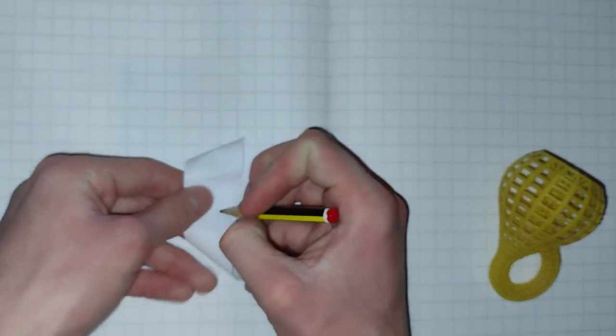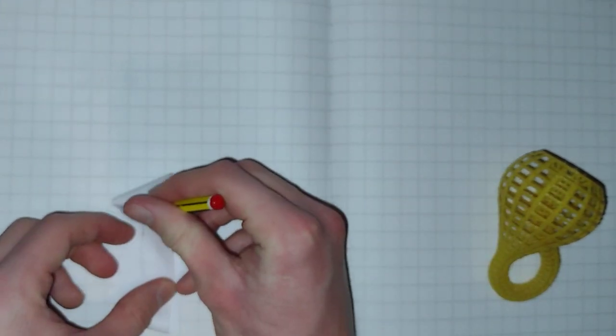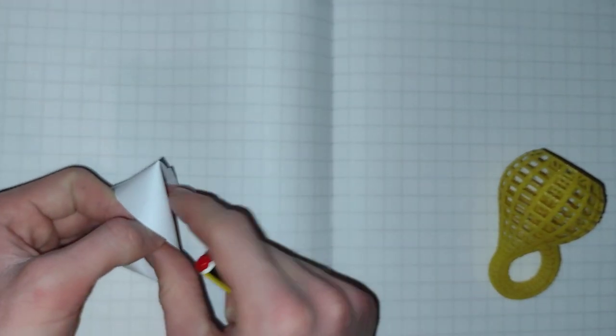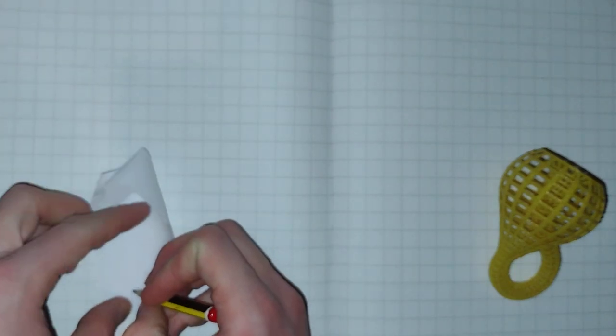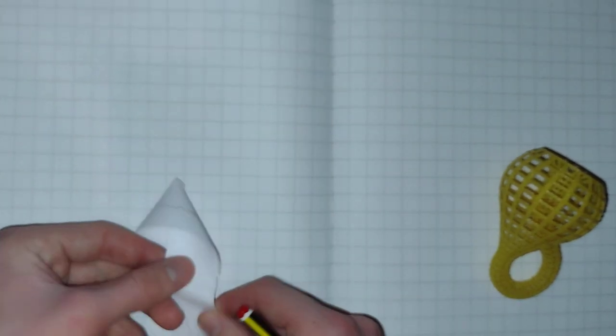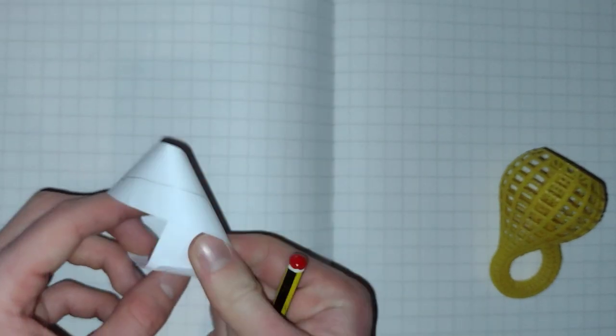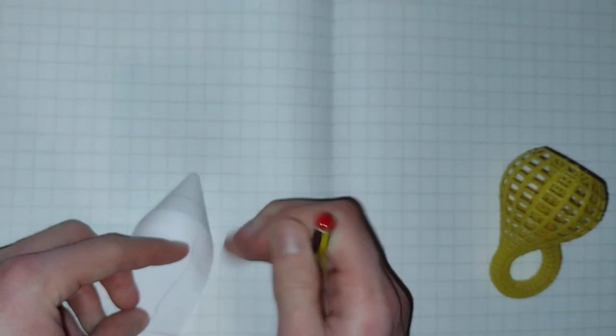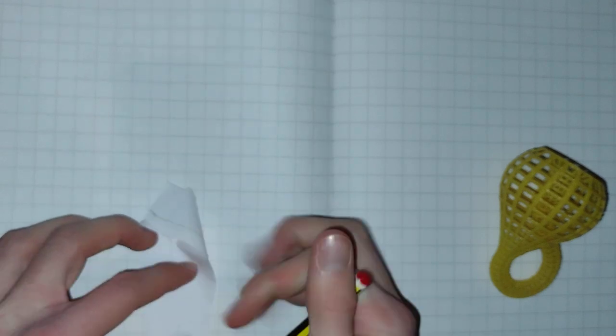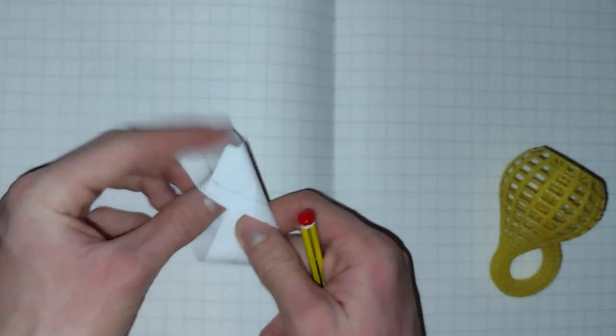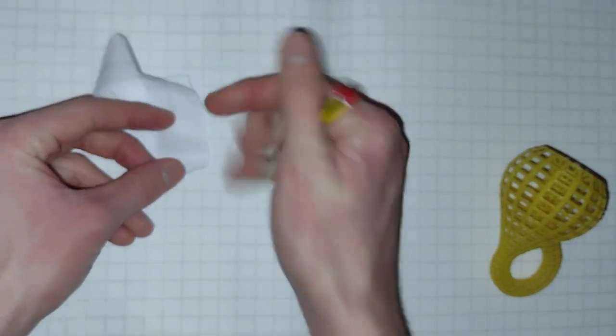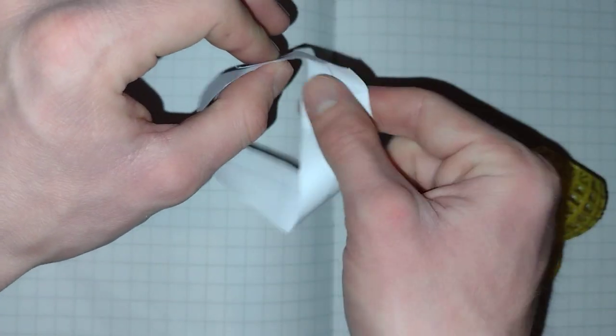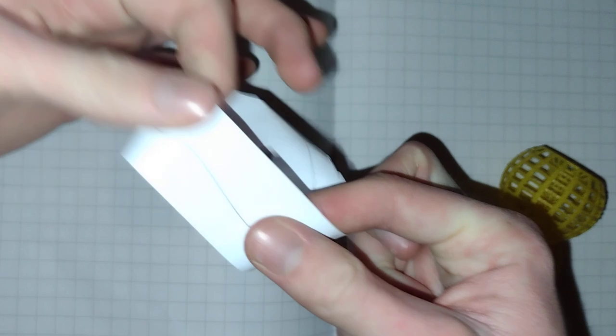You will see that there is now only one side to this loop of paper. If I get my pencil, I can draw a line. A bit tricky due to the curvature. I can draw a line all the way around to this surface. And I will eventually get right back to where I started. So it's a one-sided loop, which is really cool.